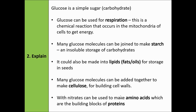Glucose is a simple sugar. Glucose can be used for respiration — a chemical reaction in the mitochondria of cells to get energy. Many glucose molecules joined together make starch, an insoluble storage of carbohydrates. It can also be made into lipids, which are fats and oils for storage in seeds. Many glucose molecules added together make cellulose for building cell walls, and with nitrates, glucose can be used to make amino acids, the building blocks of proteins.